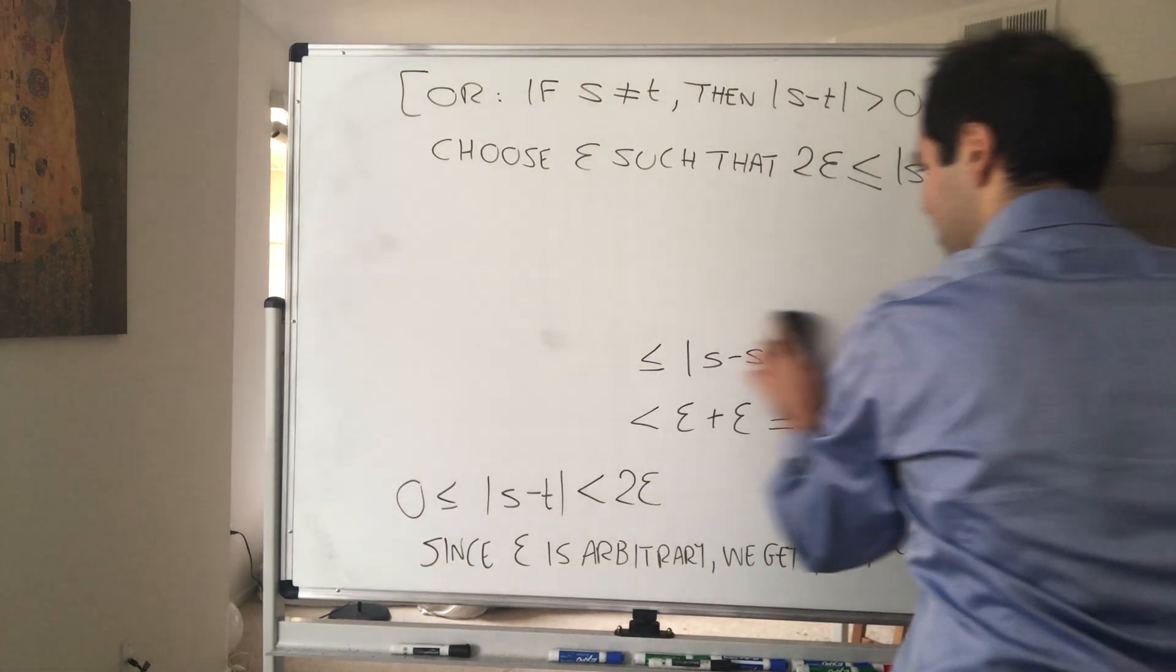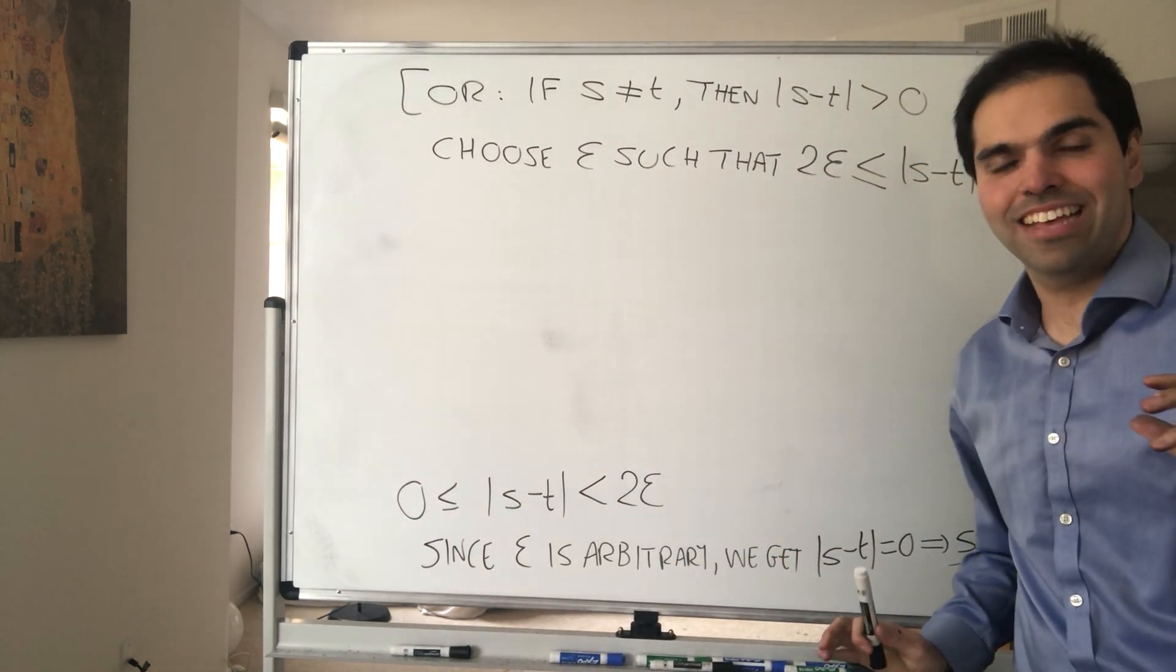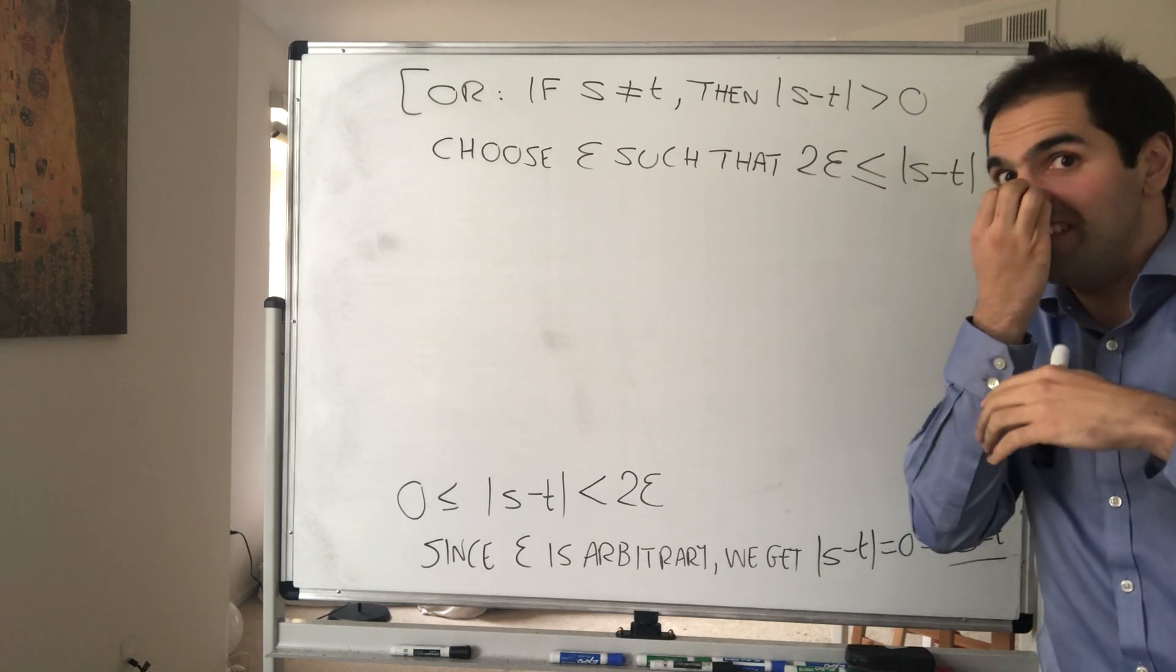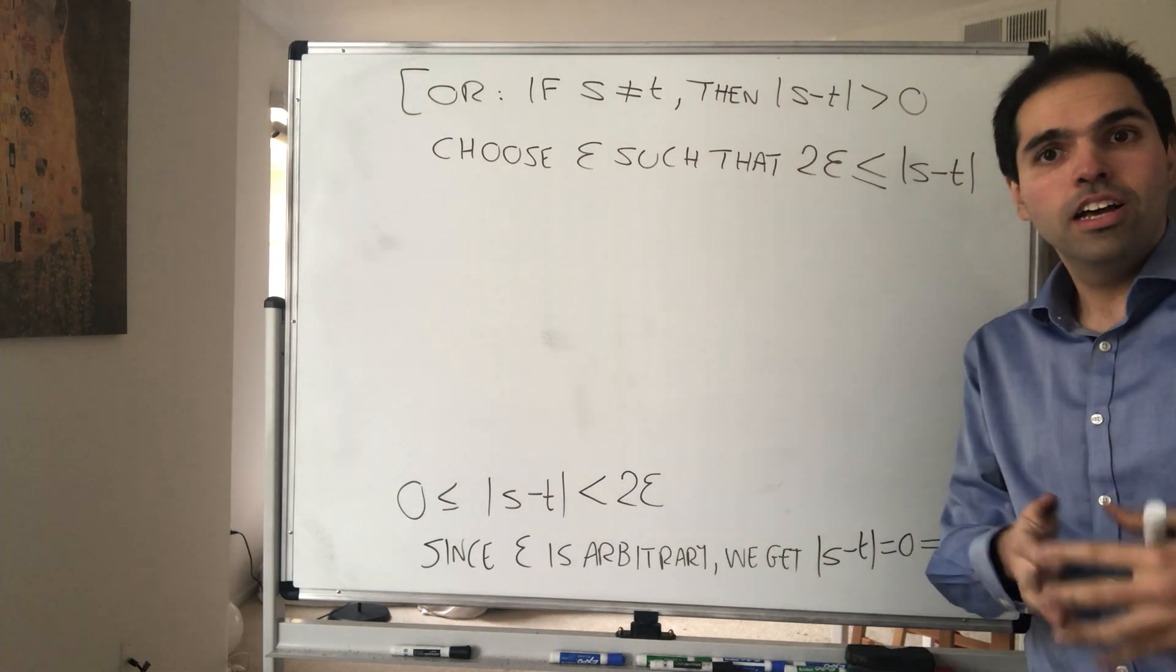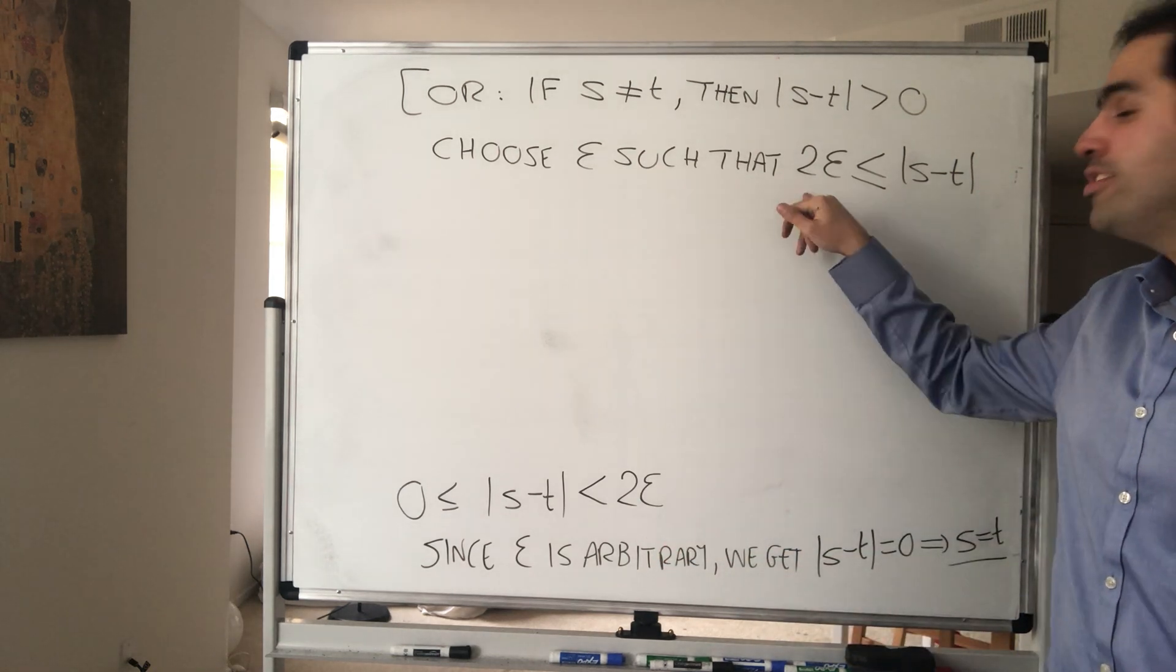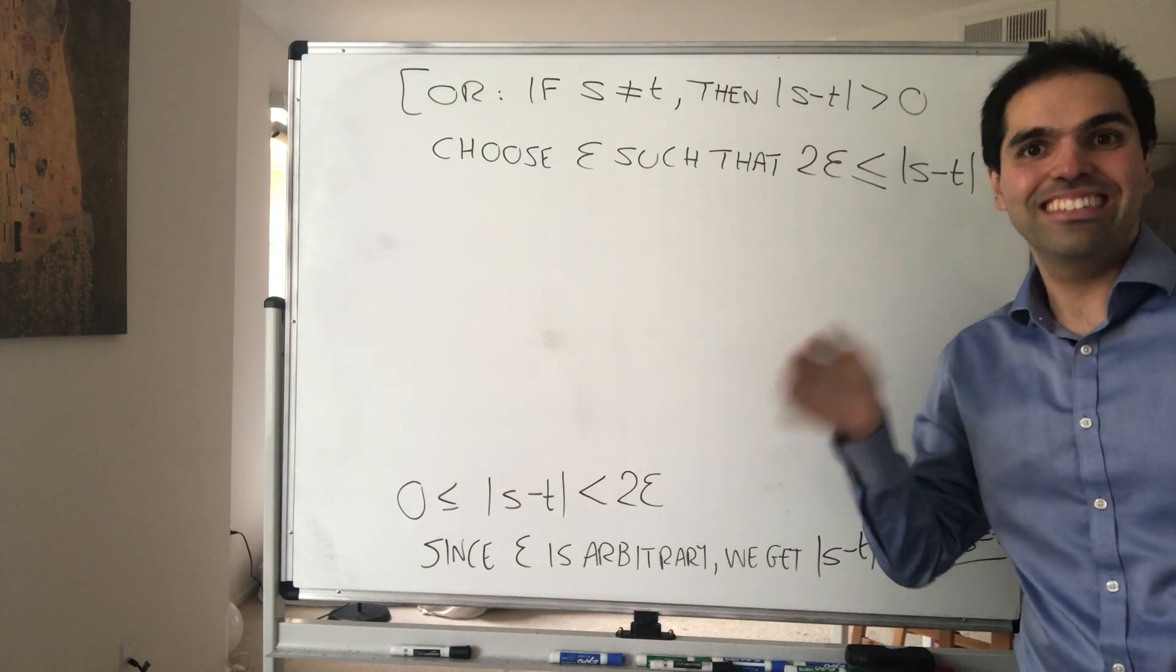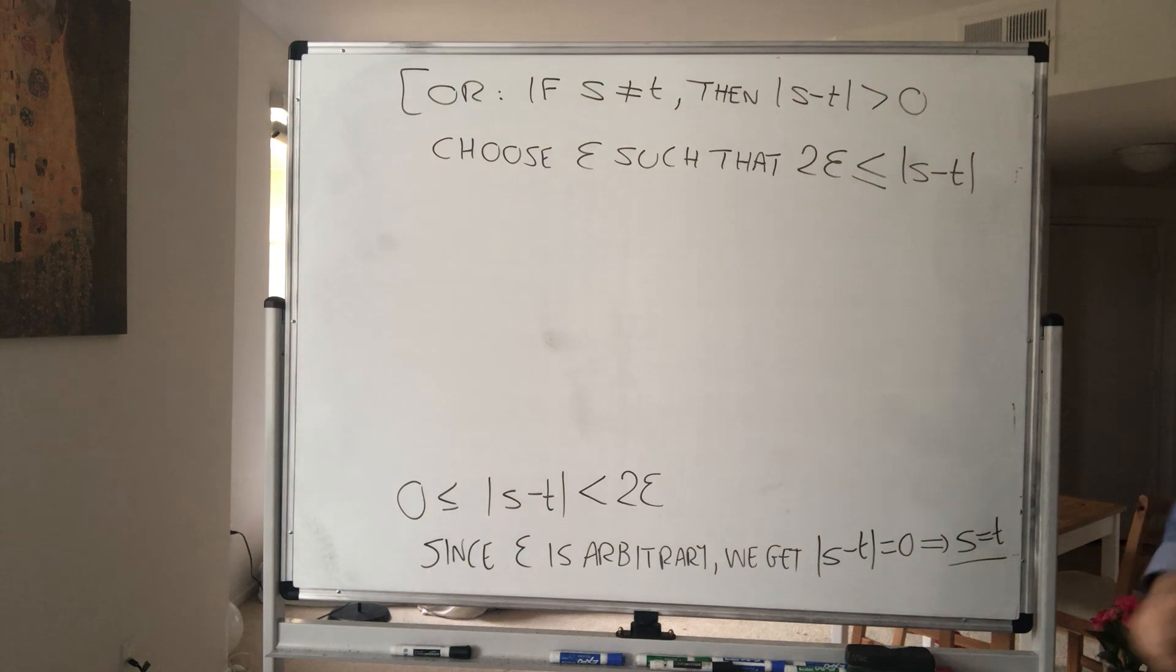And then, by the way, you see, this is really analysis at its finest. We'll have this weird variable Epsilon that we don't know what to do, okay? And really, at the end, you choose your Epsilon such that it solves the problem. So again, this is super, super classical in analysis.